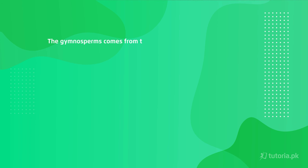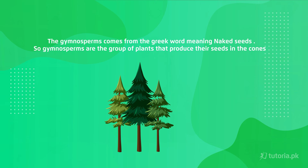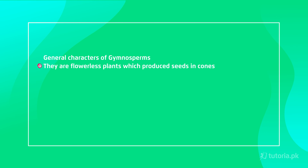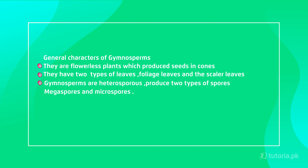After evolution, we talk about the groups that produce seeds. The first group is Gymnosperm. Gymnosperm comes from a Greek word meaning 'naked seed.' Gymnosperms are plants that produce seeds in their cones. Their general characters include: they are flowerless plants that produce seeds in cones; they have two types of leaves — foliage leaves and scale leaves; they are also heterosporous, producing megaspores and microspores; and their cones are unisexual, meaning there are separate female and male cones.